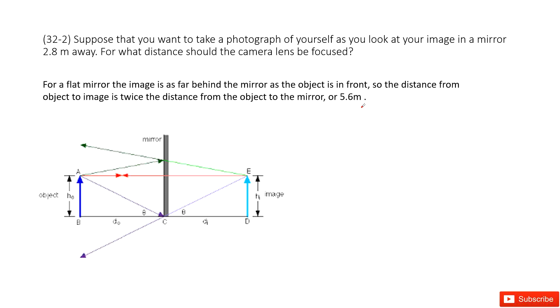For what distance should the camera lens be focused? For this case, let's ask how far away the image from the mirror is to yourself. As we know, for a flat mirror, the image is as far behind the mirror as the object is in front.